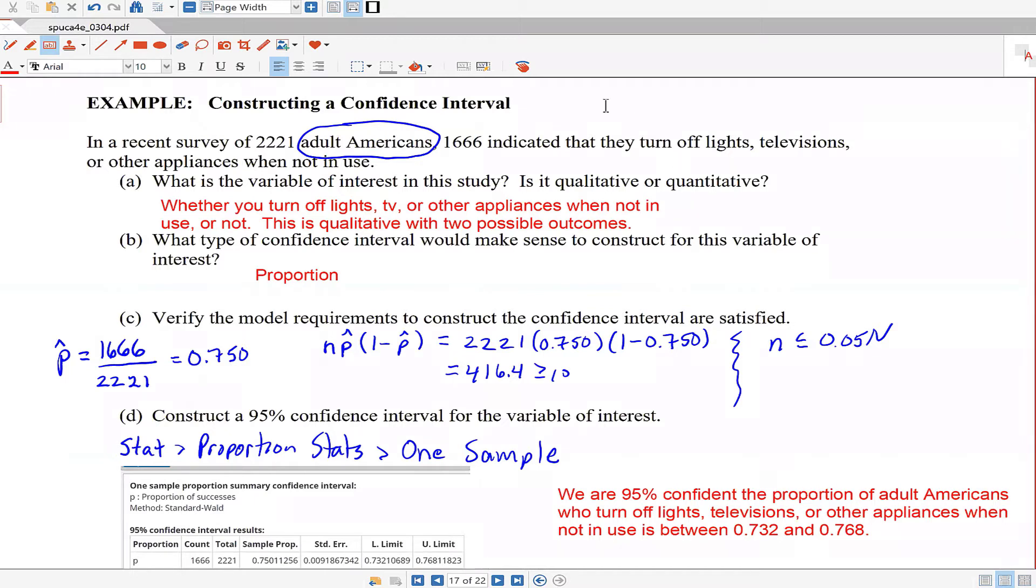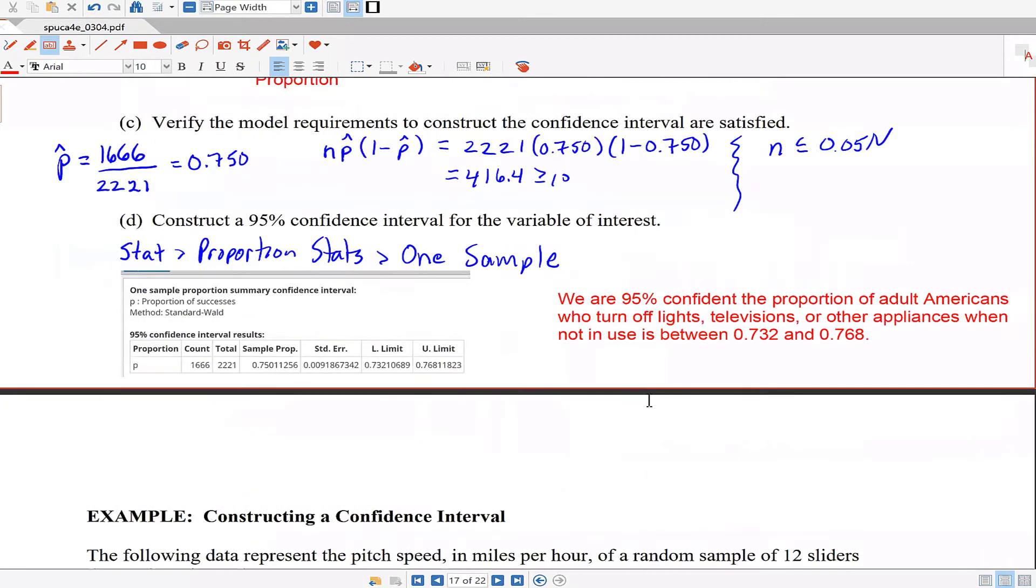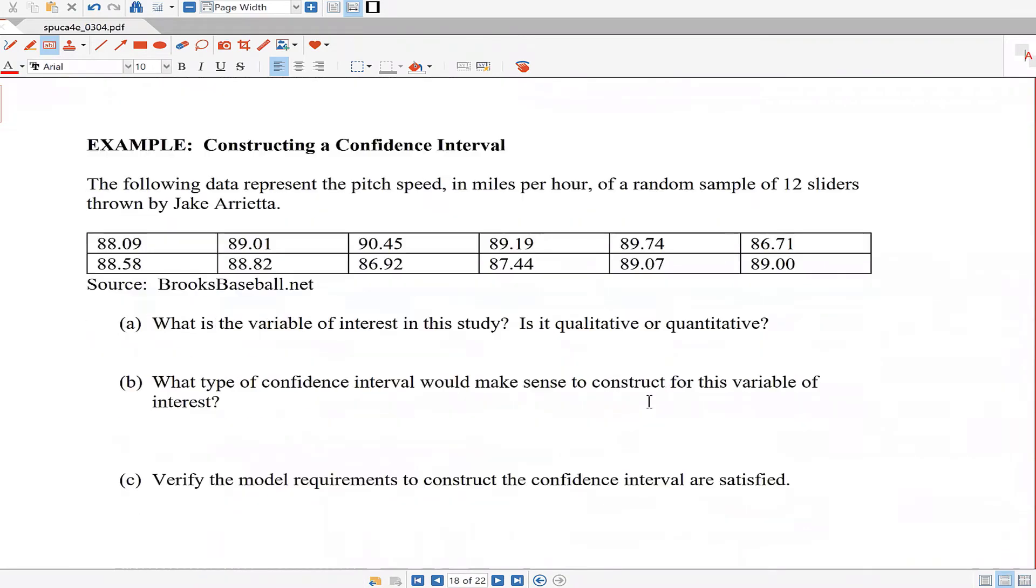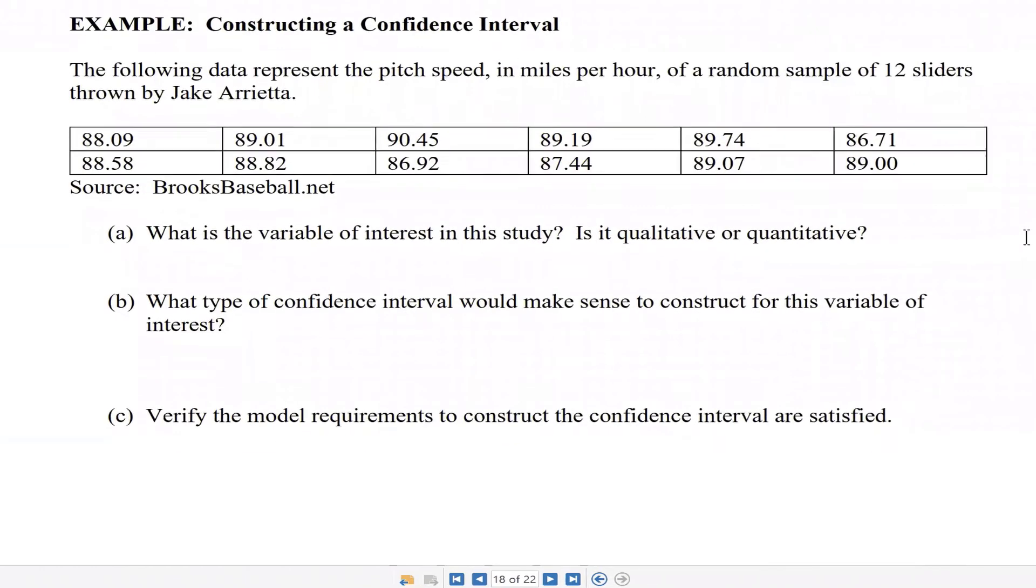For the explanation for that, for proportion stats, you would obviously say the proportion of whatever the variable is. But if we're doing the student's t-interval, you would change that for the mean. So let's segue into this problem. This data represents the pitch speed in miles per hour of a random sample of 12 sliders thrown by Jake Arrieta, who used to pitch for the Cubs.